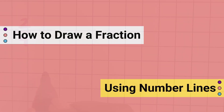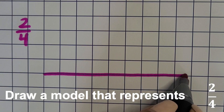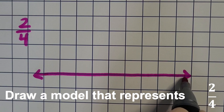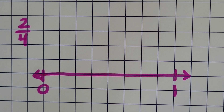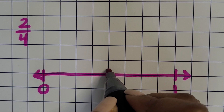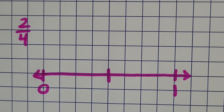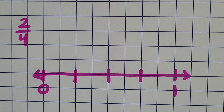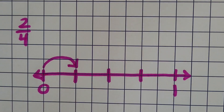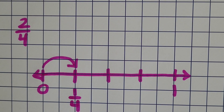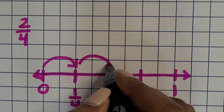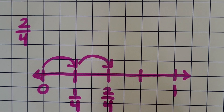How to draw a fraction using number lines. Using grid paper, draw a straight line across and label one endpoint zero and the other endpoint one. Partition the line into four equal sections to represent fourths — every two squares equals one fourth. Once you create your fourths, label everything or label it up to the point that represents the fraction. Starting at zero, jump from zero to the first tick mark — that's one fourth — and from that first tick mark to the second tick mark is two fourths.